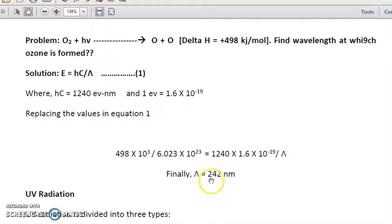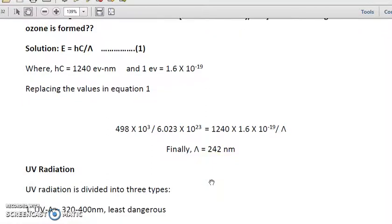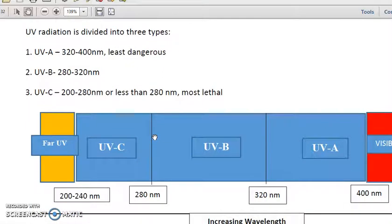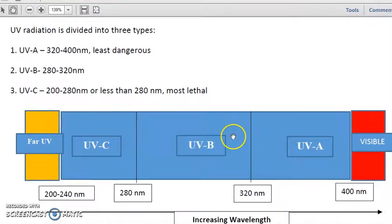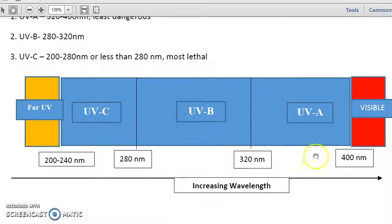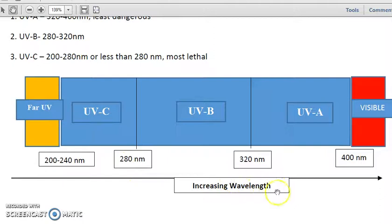The value 240 to 242 nanometers falls in the UVC range. UVA ranges from 320 to 400 nanometers, UVB from 280 to 320 nanometers, and UVC from 100 to 280 nanometers. Visible light is approximately 400 to 700 nanometers. UVA is the least dangerous type of UV radiation, while UVC is the most lethal.